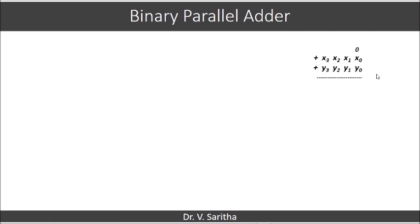The input carry is initially considered as 0. When we give 0, X0, Y0 to a full adder, we get outputs C1 and S0, and C1 is propagated to the next stage. The next full adder gets inputs C1, X1, Y1 and produces outputs C2 and S1.